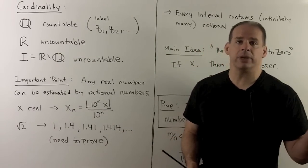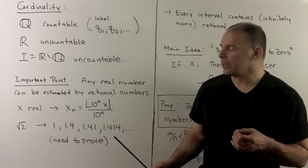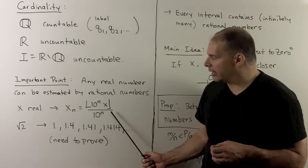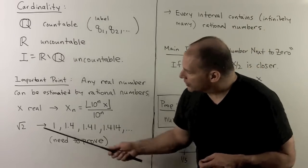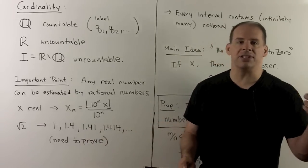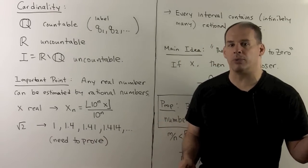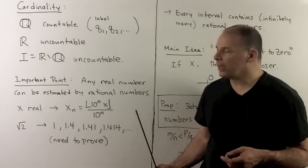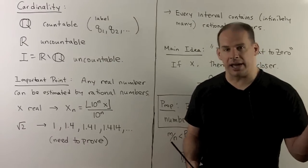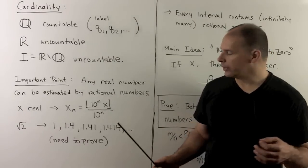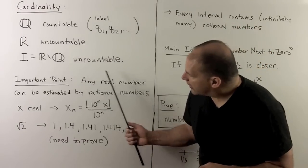For instance, if we take x times 10 to the n, and apply the floor function, and so that drops the decimal part, then we divide by 10 to the n. For instance, for square root of 2, that'll give the sequence 1, 1.4, 1.41, 1.414. And each step, I'm just adding another decimal place.